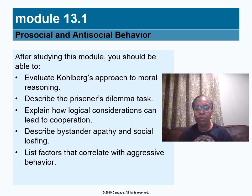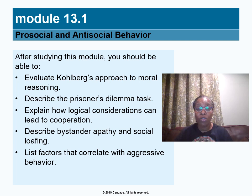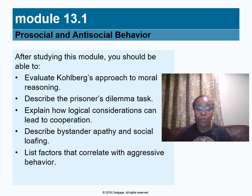This is the lecture for Chapter 13, Social Psychology. We will be going over Module 13.1: Pro-Social and Anti-Social Behaviors. Once I complete this lecture, you should be able to understand Kohlberg's approach in moral reasoning. We'll talk about the Prisoner's Dilemma Task, explain logical considerations for why we cooperate, look at bystander apathy and social loafing, and then discuss aggression and anti-social behaviors.